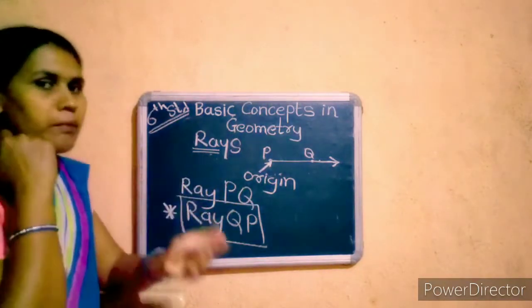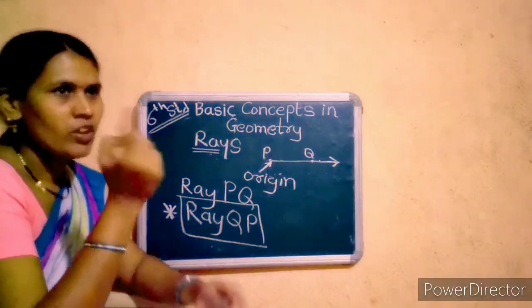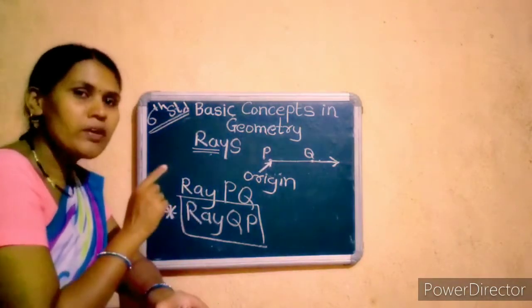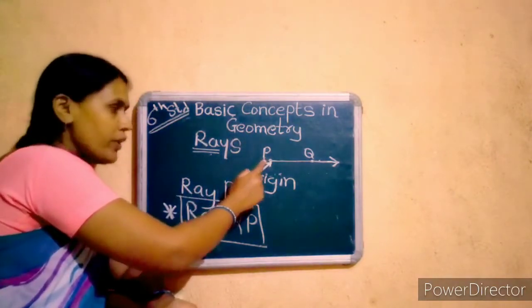In line, we can read QP or PQ. In line or line segment AB or BA, both are correct. But when we read ray, we must start with the origin point.